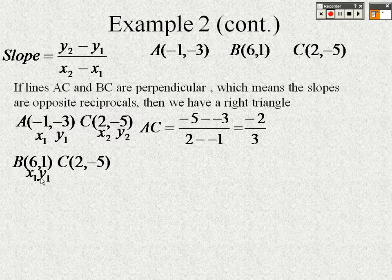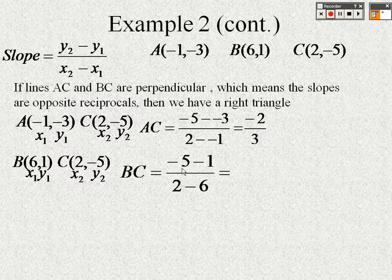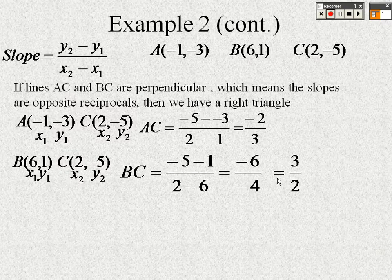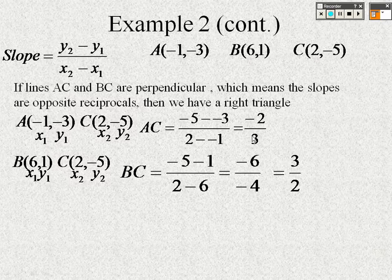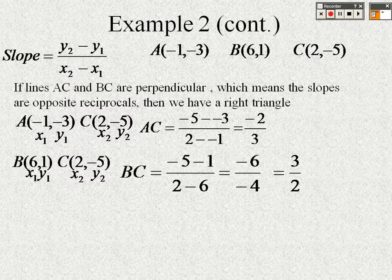Now for line BC, with B = (6, 1) as (x₁, y₁) and C = (2, −5) as (x₂, y₂): slope = (−5 − 1) / (2 − 6) = −6/−4 = 6/4 = 3/2. The slopes −2/3 and 3/2 are opposite reciprocals — opposite in sign and flipped. Therefore, AC ⊥ BC, angle C is a right angle, and the triangle is a right triangle.